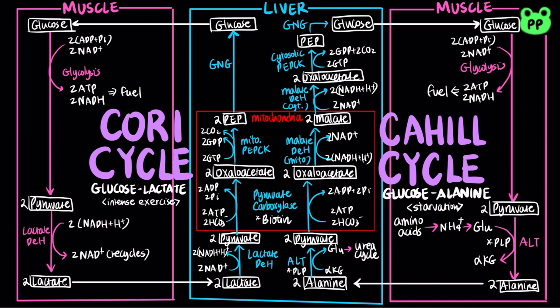In summary, the purpose of the Cori cycle is to recycle lactate generated from anaerobic fermentation during intense exercise, while the purpose of the glucose-alanine cycle is to transfer the amino group from degradation of amino acids in the muscle cells back to the liver, where it is excreted through the urea cycle. In both cycles, the liver carries out gluconeogenesis. However, they slightly differ in the first few steps of gluconeogenesis.